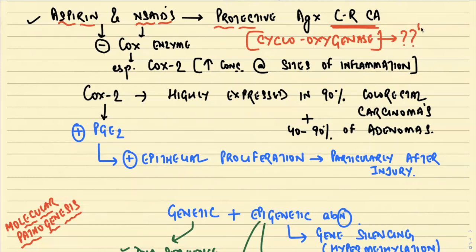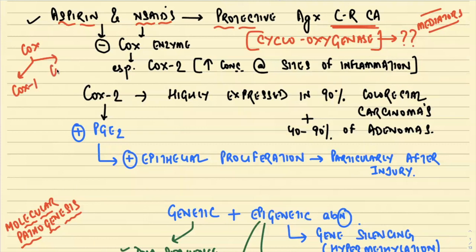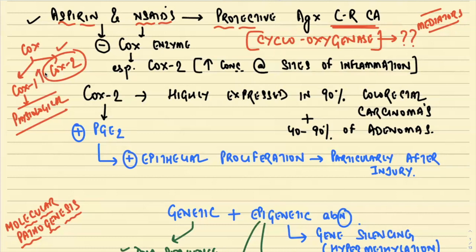We read this in the mediators of acute inflammation. One of the pathways of production of inflammatory mediators was the COX pathway and another was the LOX pathway. There are two kinds of COX: cyclooxygenase 1 and cyclooxygenase 2. COX-1 is always physiological — it functions normally in the body. Whenever there is inflammation or pathology, the amount of COX-2 increases. COX-2 is highly expressed in 90% of colorectal carcinomas and approximately 40–90% of colorectal adenomas.